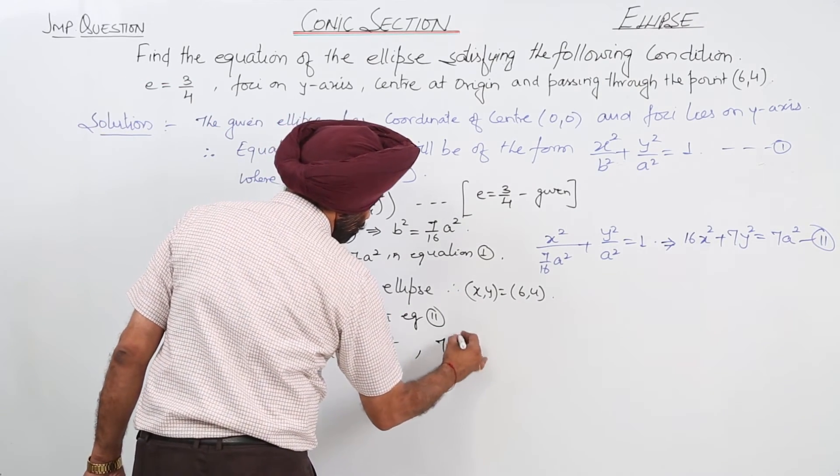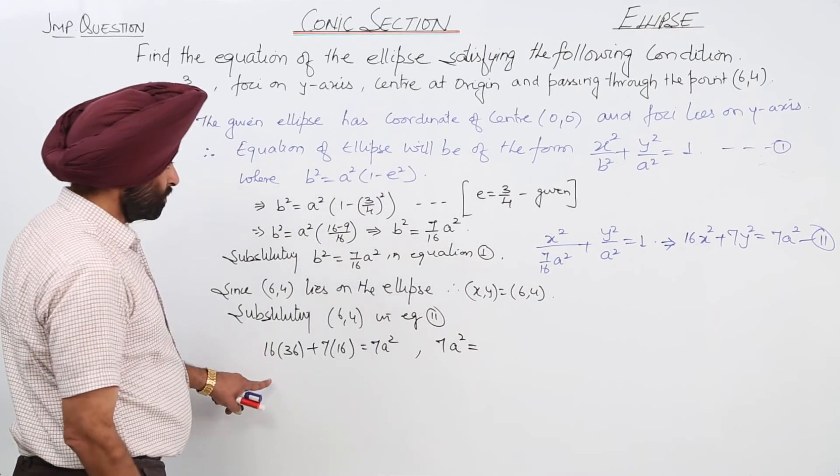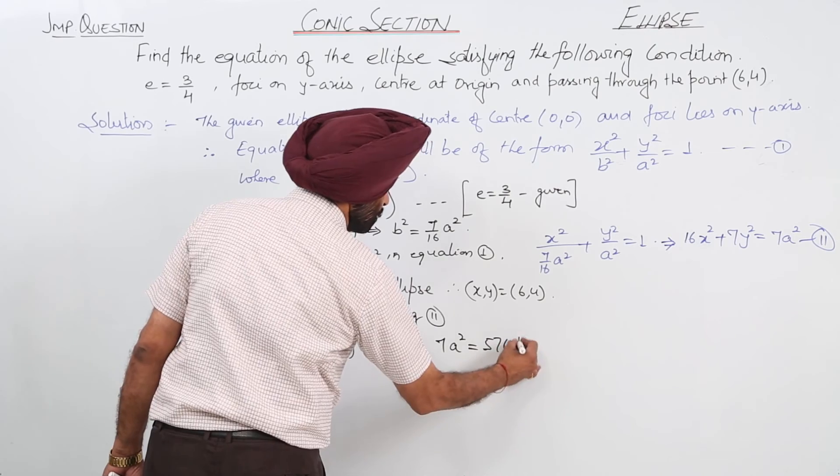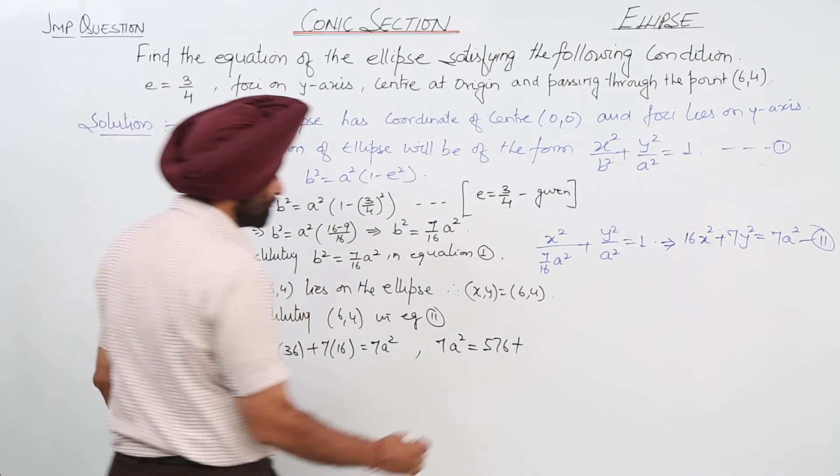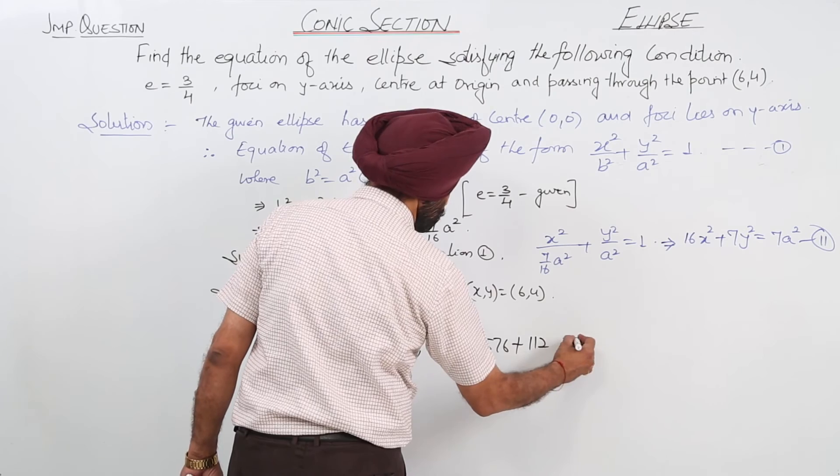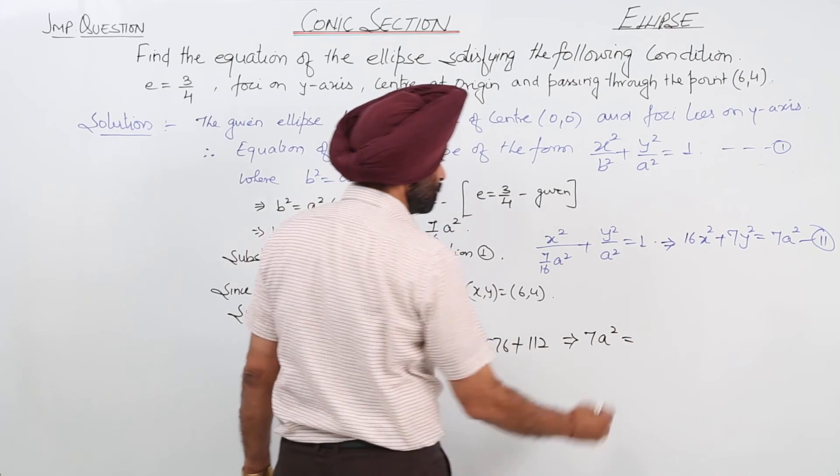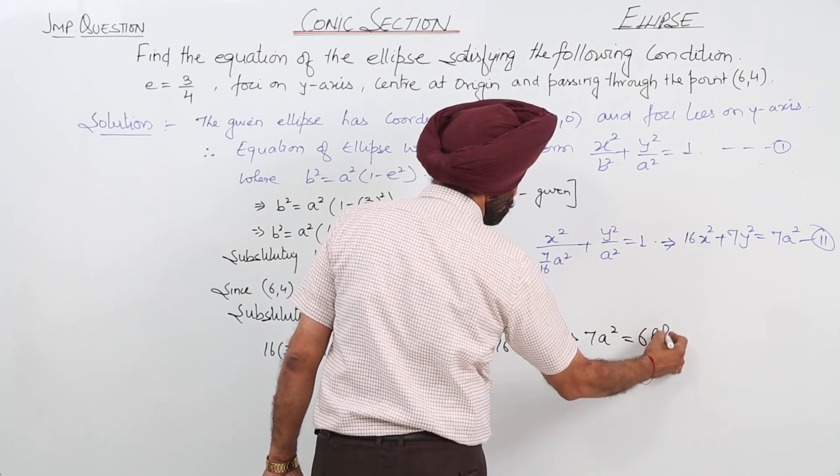Now, 7a² is equal to... 16 times 36 is 576, plus 16 times 7 is 112. So 7a² is equal to 688.